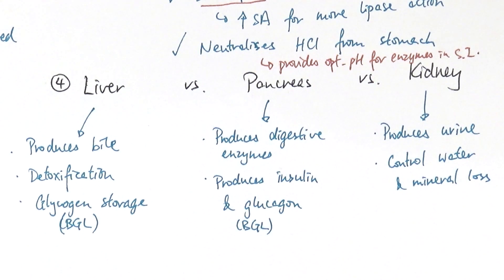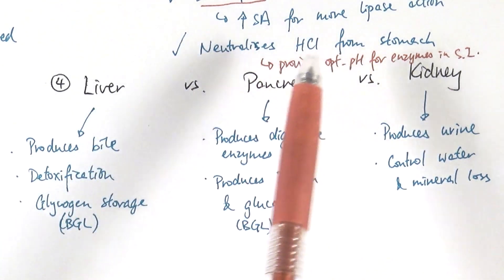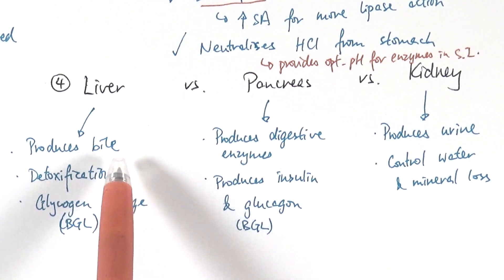A liver is one of the biggest organ in the entire body and the function is it produces bile for emulsification or neutralization to help with lipid digestion. Alternatively, it also does detoxification. So it basically breaks down any alcohol or any medicine that you take when you're ill and also lactic acid,